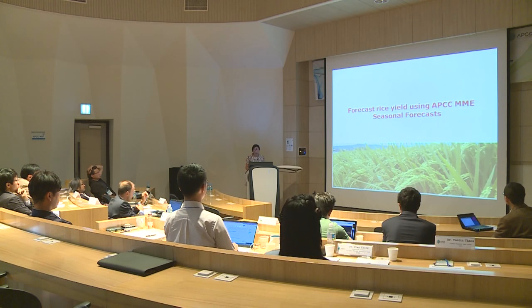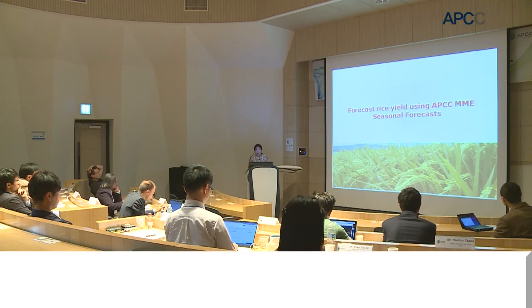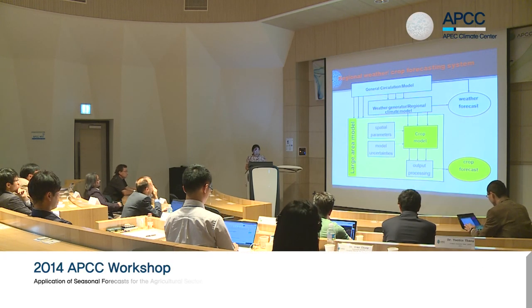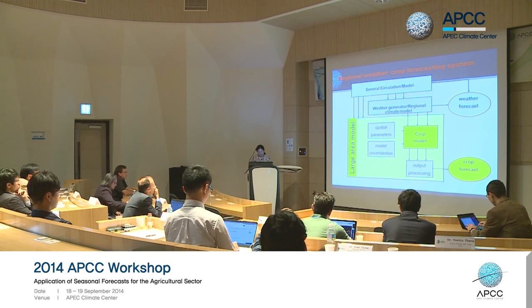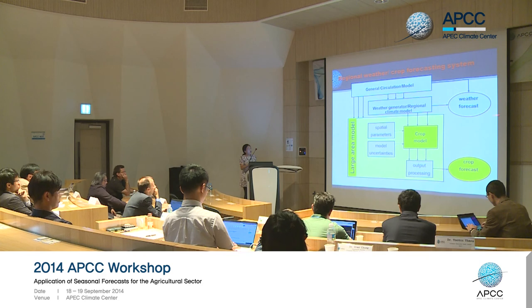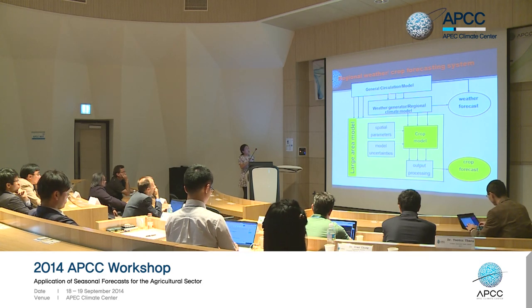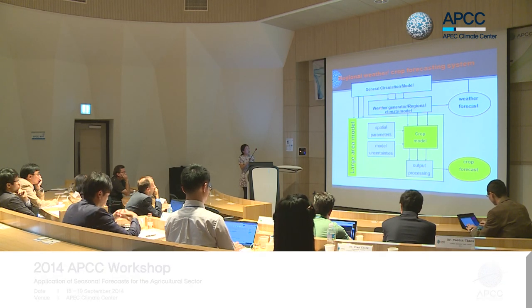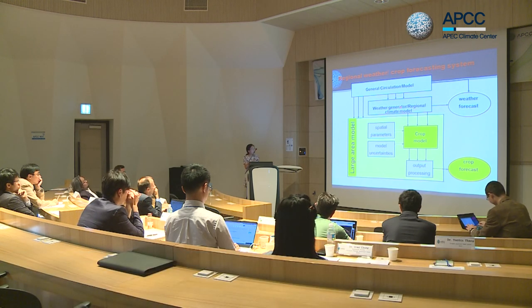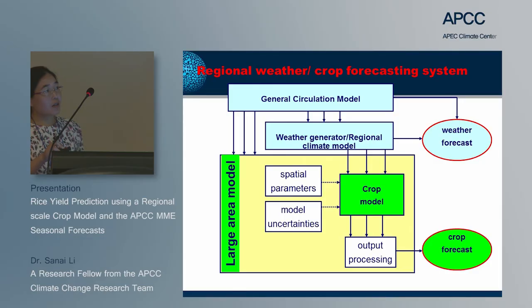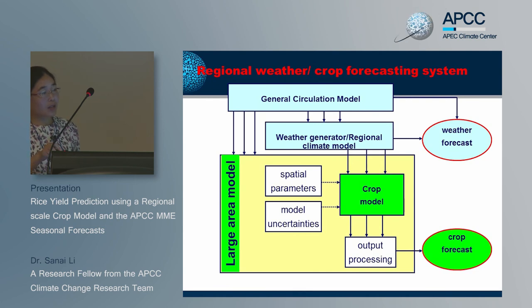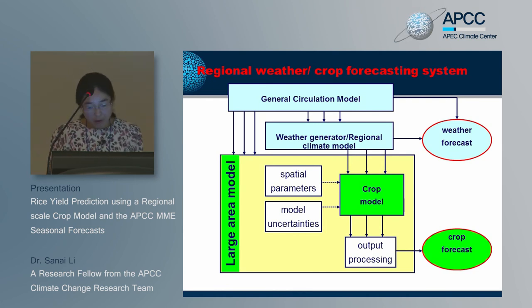For forecasting rice yield using APCC MME seasonal forecasts, the regional weather-crop forecast system works as follows: weather forecasts from general circulation models were downscaled using a weather generator based on historical climate data. Then downscaled weather forecasts were linked with the crop model to assess spatial parameters and model outputs. Finally, post-processing produced the forecast crop yield.